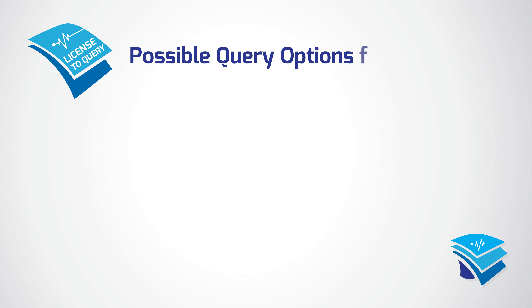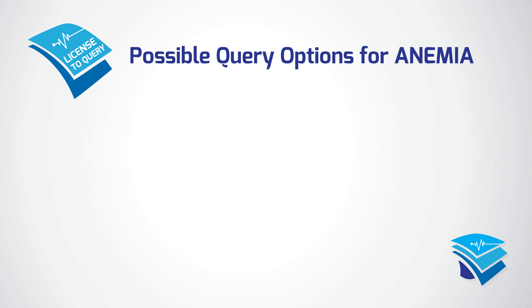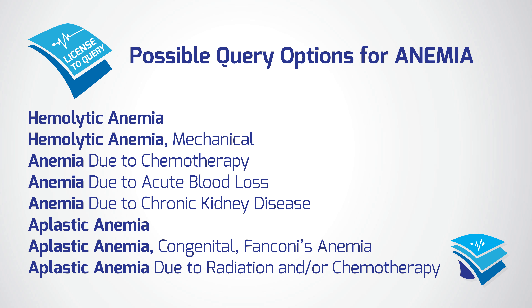Possible query options for anemia include deficiency anemia dietary folate, deficiency anemia iron deficiency due to chronic blood loss, deficiency anemia vitamin B12 due to intrinsic factor deficiency, refractory anemia with excess blasts 1, refractory anemia with excess blasts 2, refractory anemia with ring sideroblasts, hemolytic anemia, hemolytic anemia mechanical, anemia due to chemotherapy, anemia due to acute blood loss, anemia due to chronic kidney disease, aplastic anemia, aplastic anemia congenital Fanconi's anemia, and aplastic anemia due to radiation and/or chemotherapy.